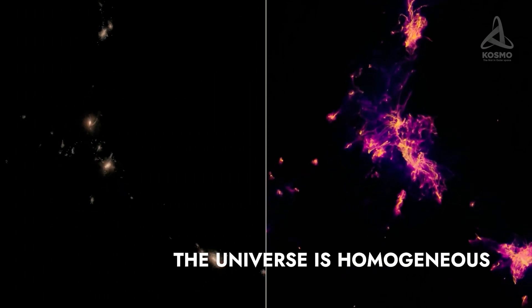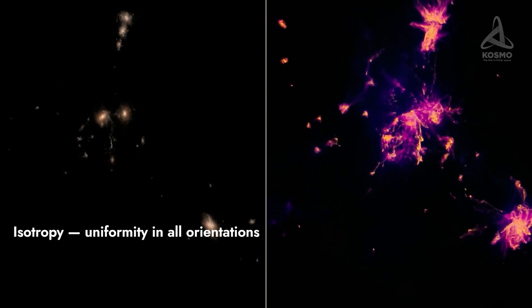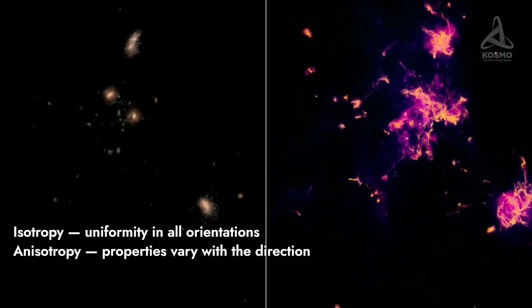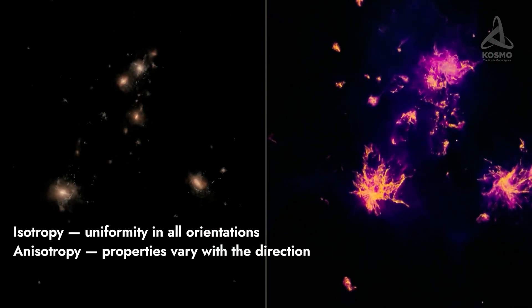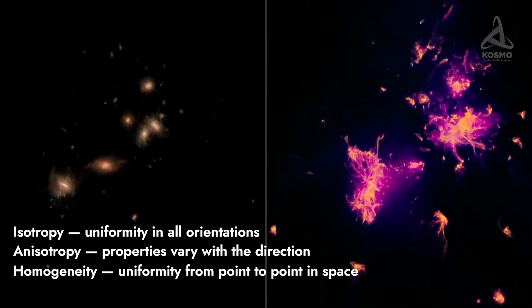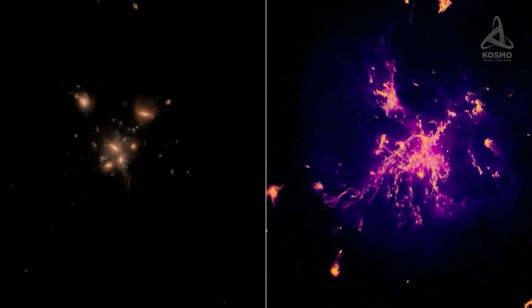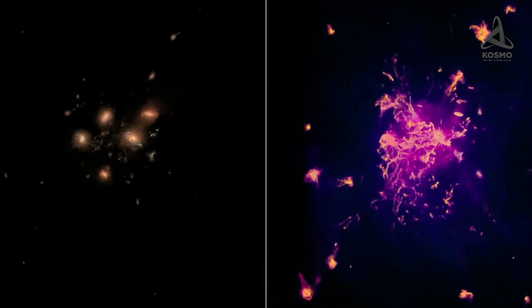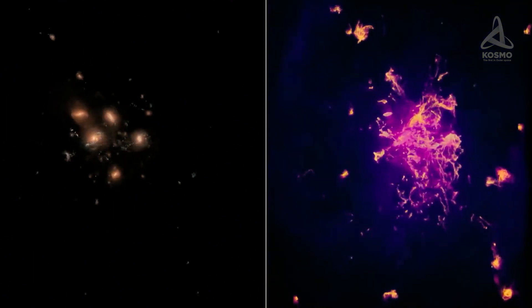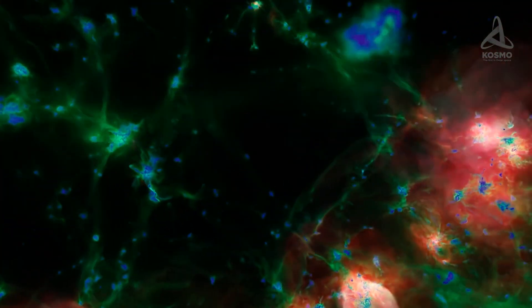Isotropy means uniformity in all orientations, while anisotropy means that properties vary with the direction from which they are measured. As for homogeneity, it means uniformity from point to point in space. It could be illustrated in the following way. Wherever you were to find yourself in the universe, the space around you would be more or less the same. Consequently, the universe is isotropic and homogeneous.